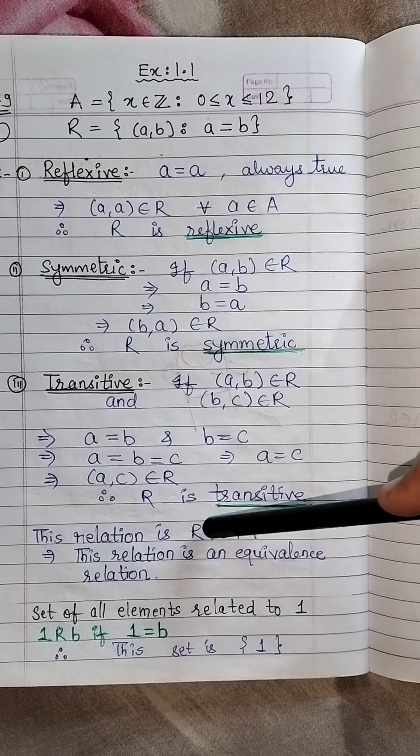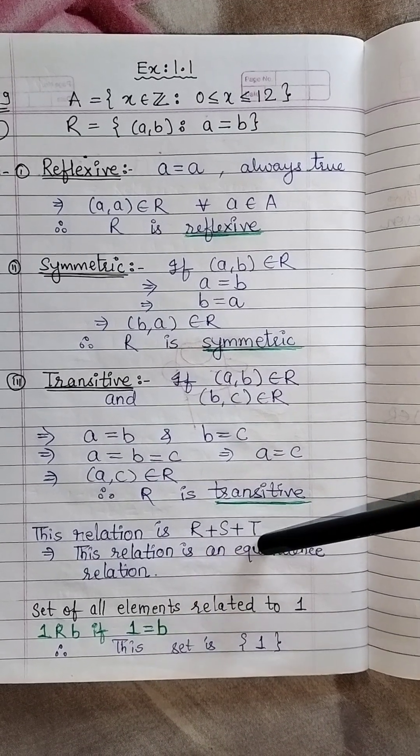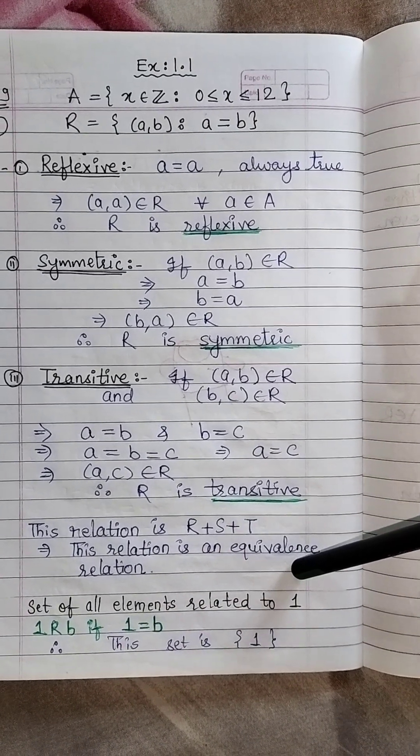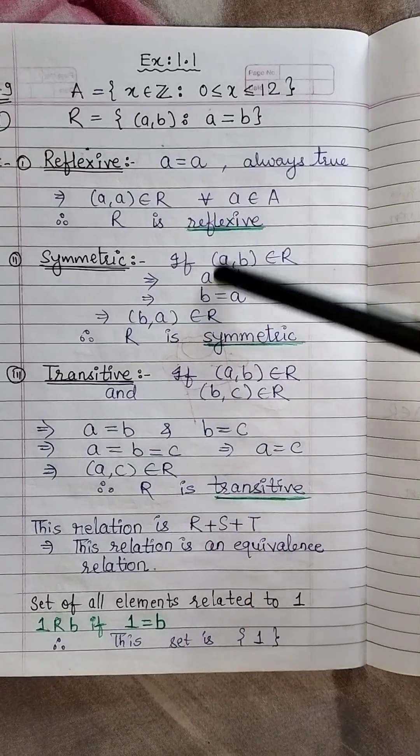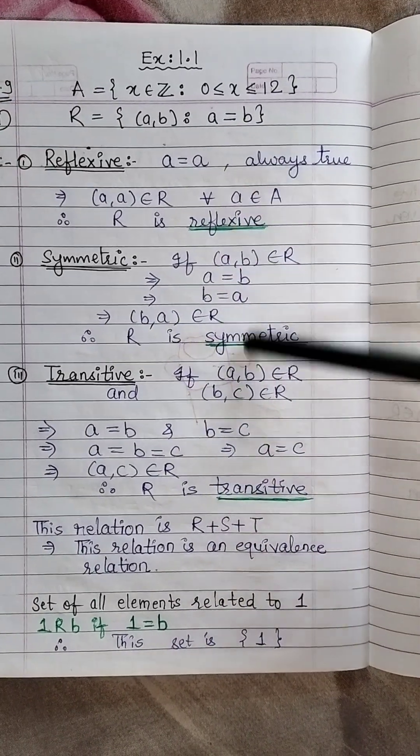So this relation is reflexive, symmetric as well as transitive and hence it becomes an equivalence relation. This question is very obvious, you have to write it properly.